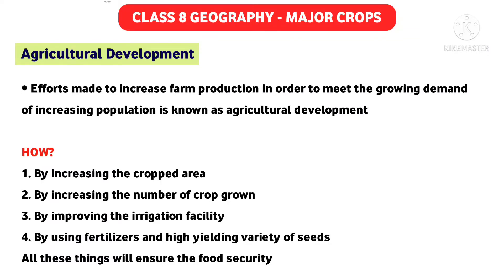The second way is by increasing the number of crops grown. If we are only growing rice, we should also grow maize, millets, or any other crop at the same time. Growing two or three crops simultaneously would ultimately benefit the farmers greatly. If we increase the number of crops grown in our field, agricultural development would also be achieved through this method.